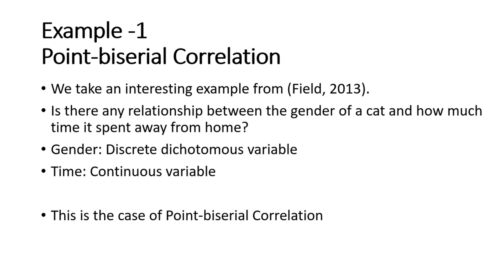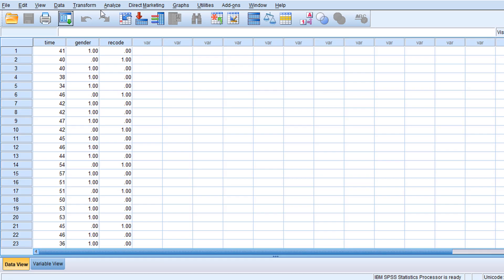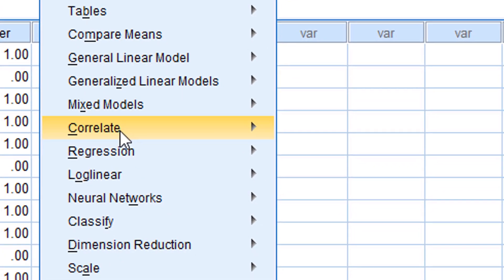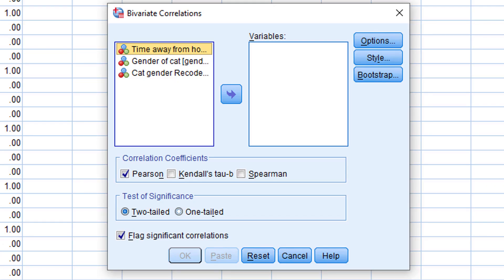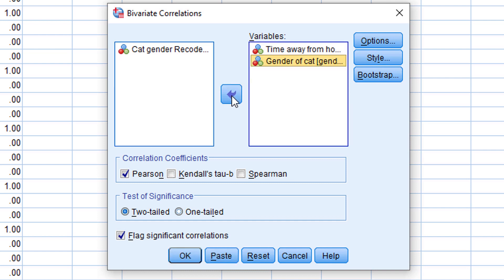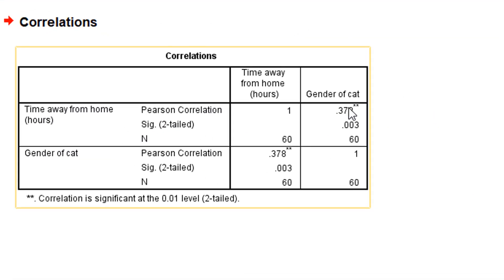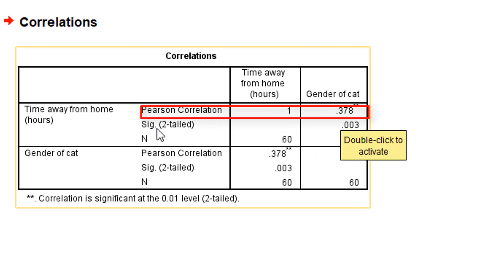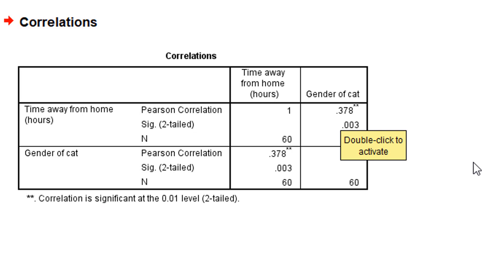To calculate this we go into SPSS: Analyze → Correlate → Bivariate. We add two variables: time and the gender of the cat. We click Pearson correlation coefficient and click OK. The output shows that the correlation is 0.378 and the p-value is 0.003, which is less than 0.05. This represents a moderately strong and statistically significant relationship between the gender of the cat and time spent away from home.